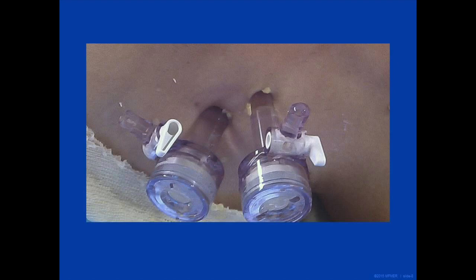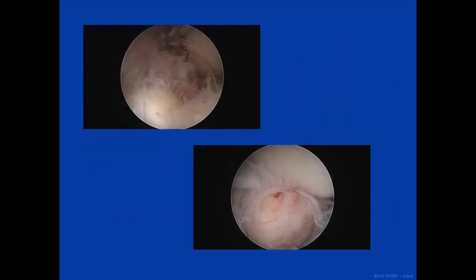The steps are then repeated with a second more anterior and distal portal and a second cannula was inserted. As seen in the figure in the upper left, the arthroscope can then be inserted through either portal for viewing of the posterior compartments of the knee from the posterior medial aspect. One serves as a viewing portal, while the second serves as a working portal. These are interchangeable depending on location of pathology and allow for use of a variety of instrumentation.